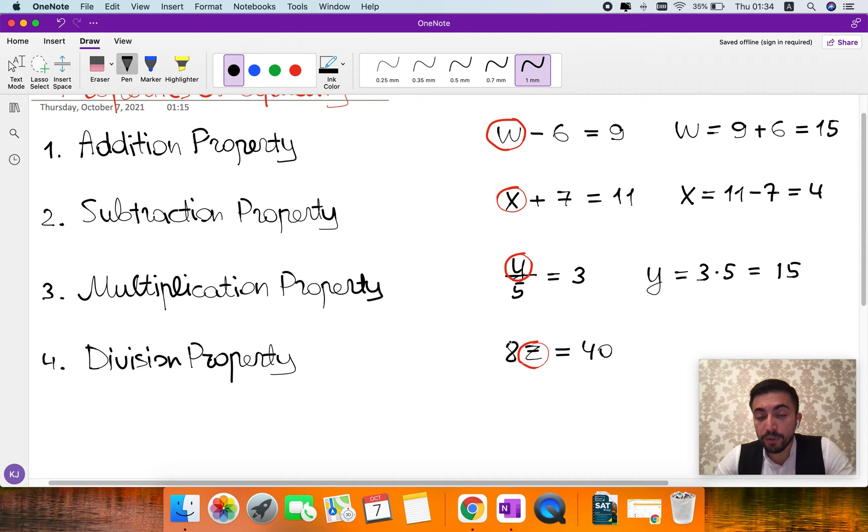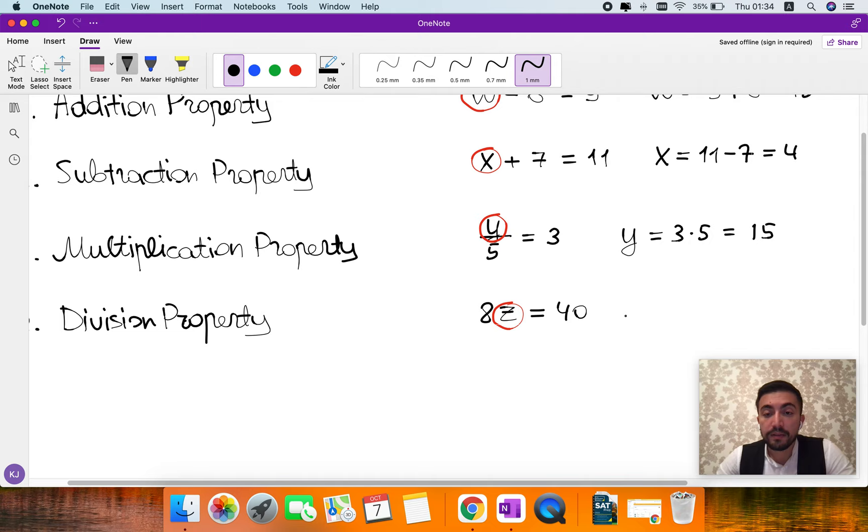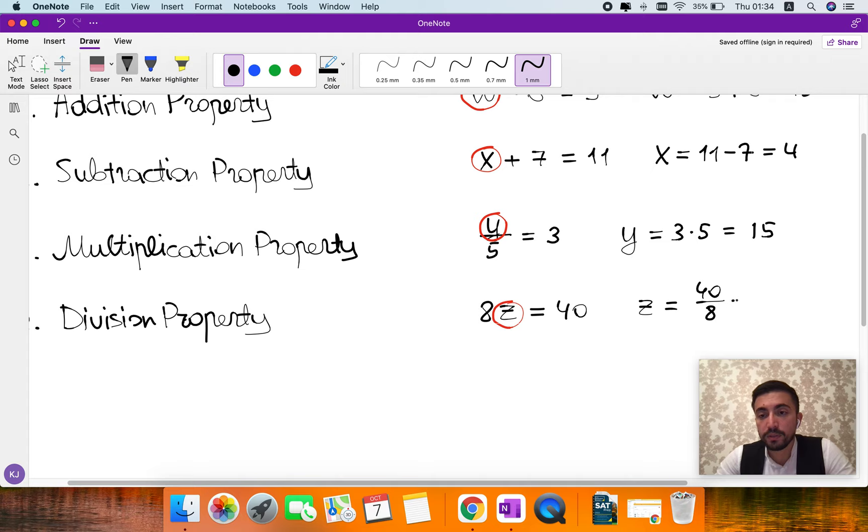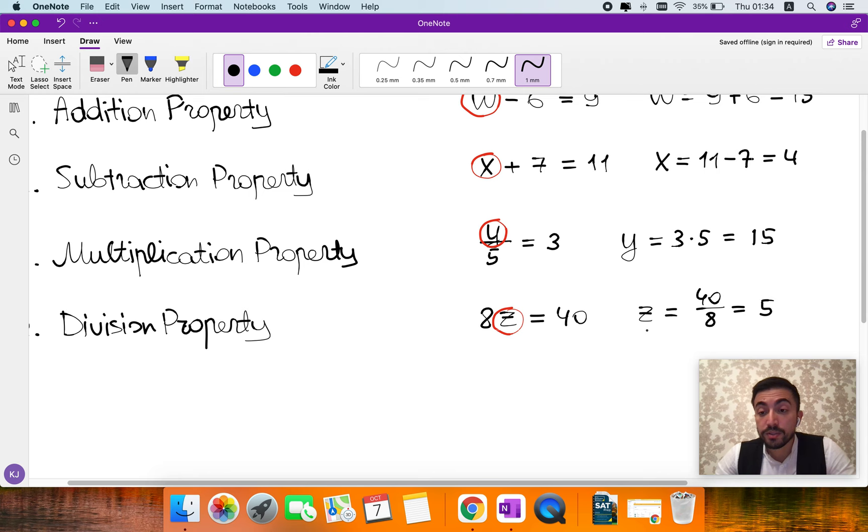To get rid of 8, we need to divide both sides of the equation by 8. So if we divide the left side, we will get Z. If we divide the right side, we will get 5. So Z equals 5.